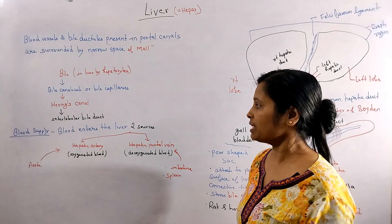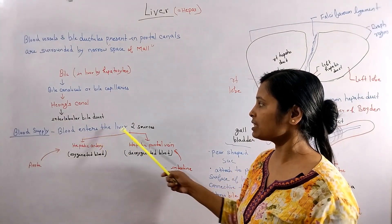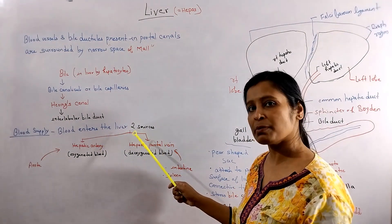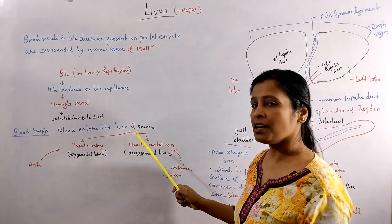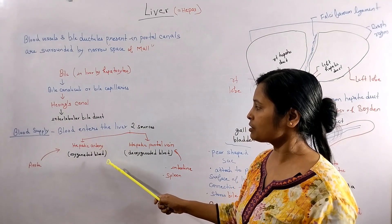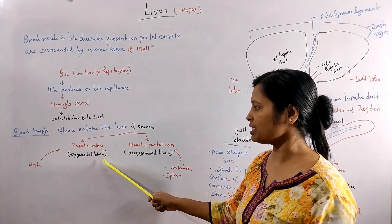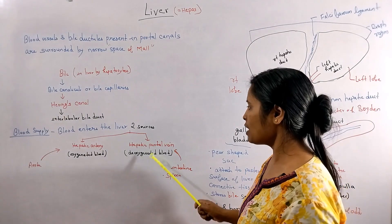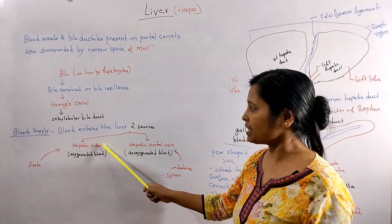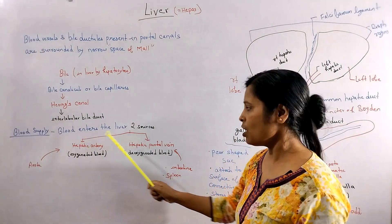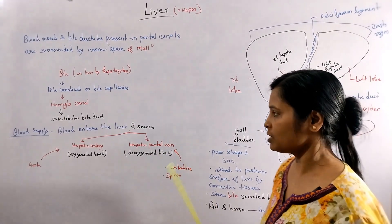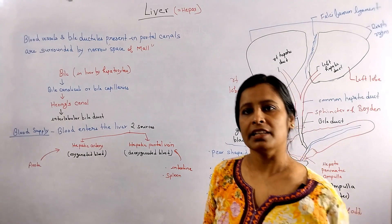Now let's look at the blood supply of the liver. Blood enters the liver through two sources: the hepatic artery, which carries oxygenated blood, and the portal vein, which brings blood from the intestines and spleen.